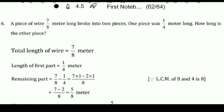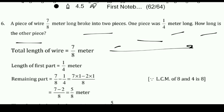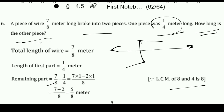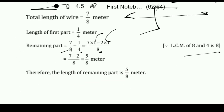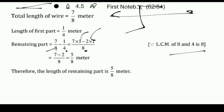Question number 6: A piece of wire is 7 upon 8 metre long, broken into 2 pieces. One piece is 1 by 4 metre. How long is the other piece? Total is 7 by 8, and one piece is 1 by 4, so we subtract to find the remaining part: 7 upon 8 minus 1 by 4. LCM of 4 and 8 is 8. In the 8 times table, 8 comes 1 time; in the 4 times table, 8 comes 2 times. So 7 × 1 = 7 and 1 × 2 = 2. Therefore 7 minus 2 is 5 upon 8. The length of the remaining part is 5 upon 8 metre.